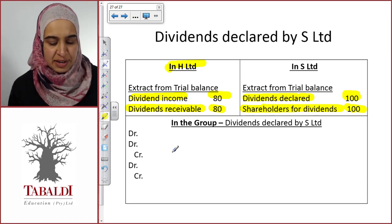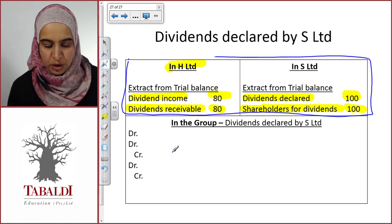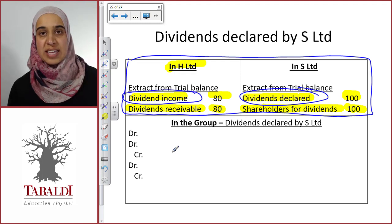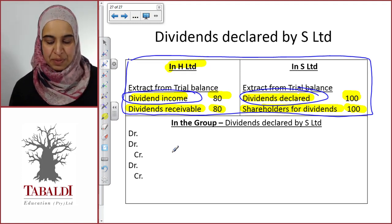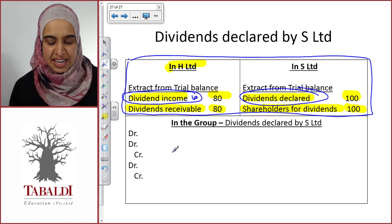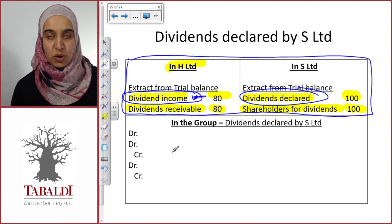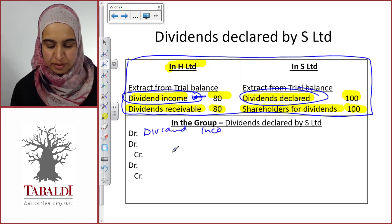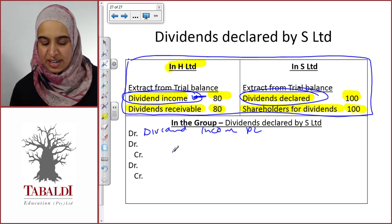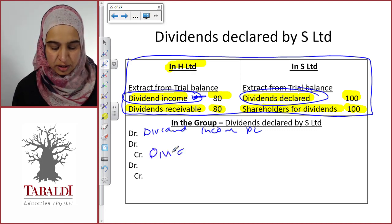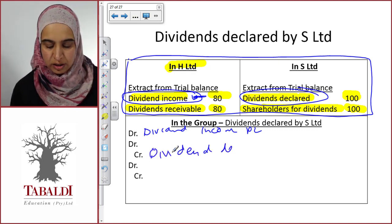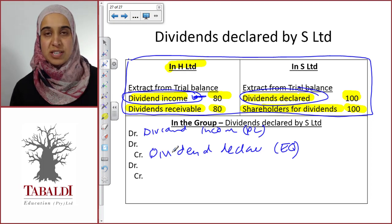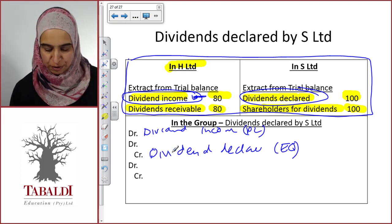Within the group financial statements, we now have dividend expense and dividend income relating to exactly the same dividends, so we need to eliminate them. To eliminate dividend income, which is a credit in profit or loss, we would debit dividend income in profit or loss and credit dividends declared in equity, because whenever you declare dividends, it goes directly through the statement of changes in equity and not through profit or loss.